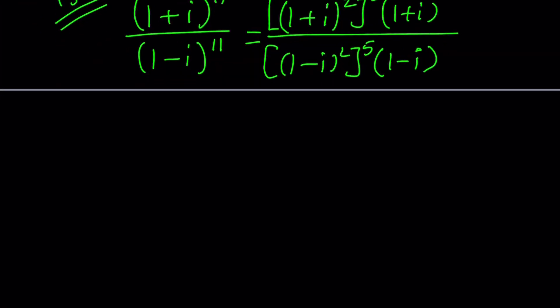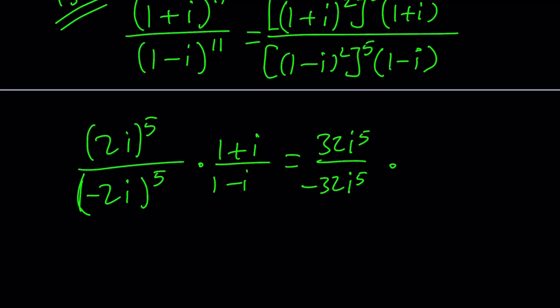If you square 1 plus I, you're going to get 2I. So that's 2I to the fifth. And this is negative 2I to the fifth with a negative sign. And then, we have 1 plus I over 1 minus I. If you expand this, you're going to get 32I to the fifth divided by negative 32I to the fifth. That is multiplied by 1 plus I over 1 minus I.